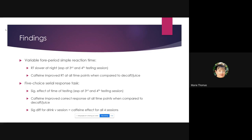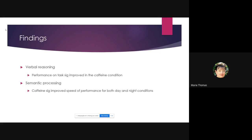For the SRT — reaction time — it was slower at night, as expected, with sessions three and four being most problematic. Caffeine improved reaction time at all time points compared to decaf and juice. For the serial response task, caffeine improved correct responses at all time points, and there was a significant drink-by-session interaction, showing that caffeine improved performance across all four sessions.